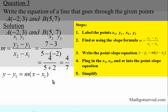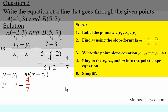Step three: write down the point-slope equation, y minus y1 equals m times x minus x1. I always write the equation first before making substitutions. Step four: plug in x1, y1, and m. y1 is three, so we have y minus three. Our slope m found in step two is four over seven. And x1 is negative two. So we get y minus three equals four over seven times x minus negative two.